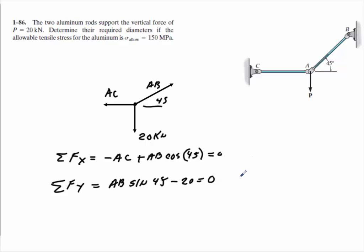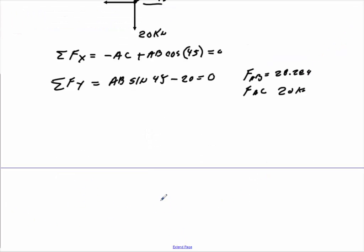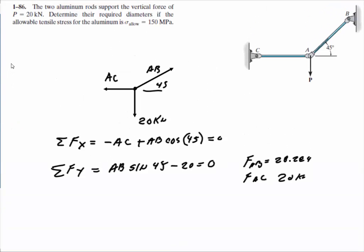If you do that, first thing you'll find out is that AB is going to be about 28.284 kilonewtons. Once you have that one here, put it back into this equation, and you'll find out what AC is, and AC is going to be about 20. Which makes sense, because if you have a 45 degree angle, then you've got a 1-1 ratio. So if I've got 20 coming down, I'll have 20 going back this way too.